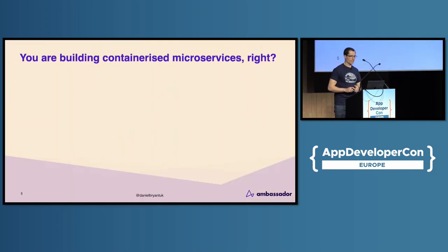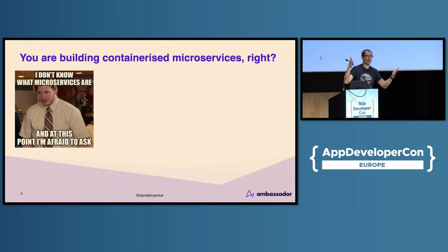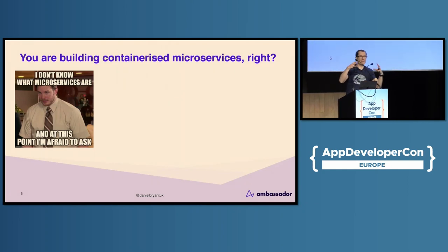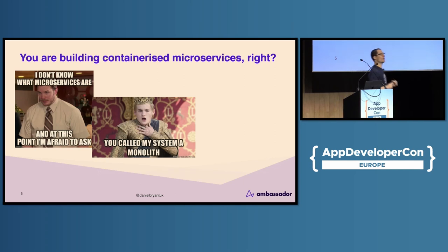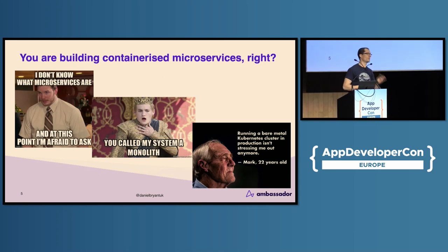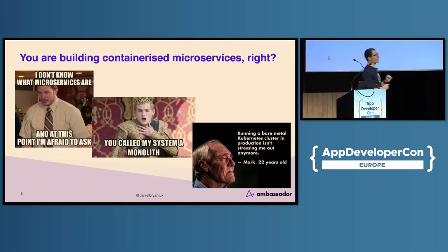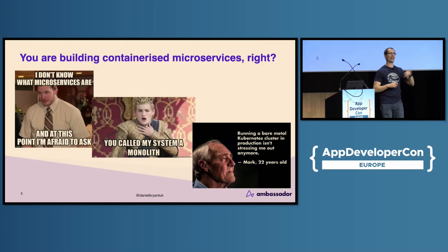Setting the scene. Most of the advice I'm going to give today is based around the idea you're building microservices running in a container. Whether we're really building microservices, small services, bounded contexts, or good APIs, I think the advice will apply even to macroservices or monoliths. One of my favorite memes: we are deploying onto Kubernetes. I love Kubernetes, but it is complicated — it's got better over the years, but it's not for the faint of heart. As a developer by trade, I had to learn a lot and I definitely aged as I learned Kubernetes.